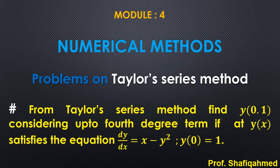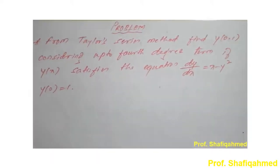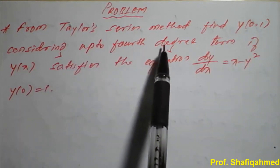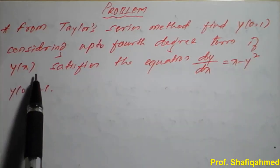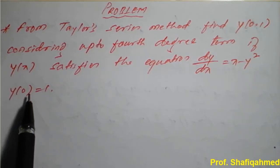Hello students. In today's class we will see problems on the Taylor series method. The problem is: find y(0.1) considering up to the 4th degree term, if y(x) satisfies the equation dy/dx = x minus y squared, and y(0) = 1.